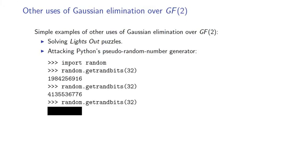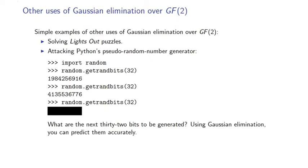So if you import the module random, you can use it to generate random bits. But what's the next 32 bits to be generated? You can actually use Gaussian elimination to predict those bits accurately.